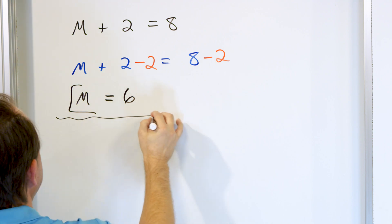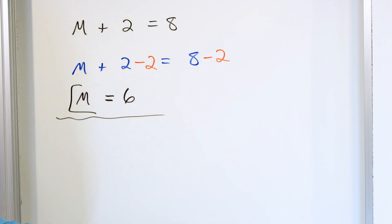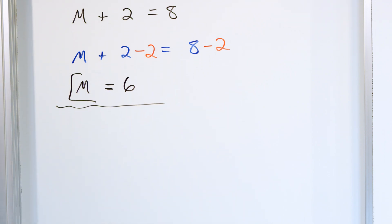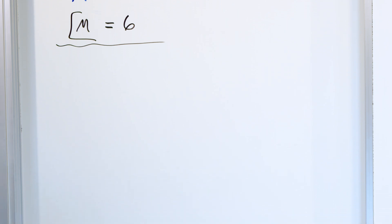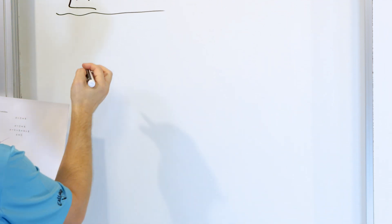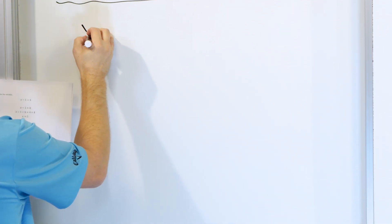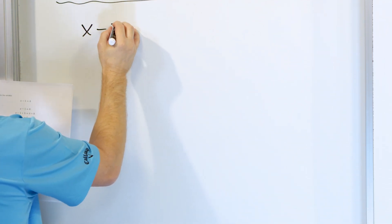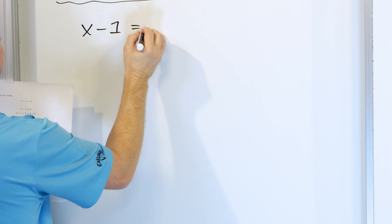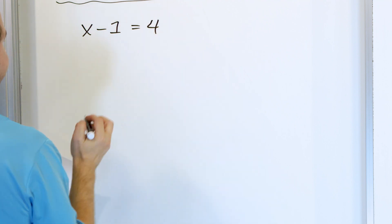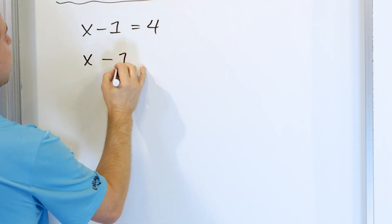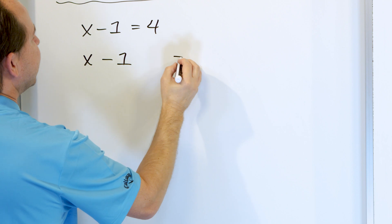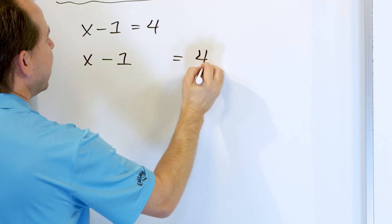If you're adding something on one side of an equation, then you can subtract and get rid of it. If you're subtracting something on one side, you can add to get rid of it. And later on, you can undo multiplication with division, and undo division with multiplication. The goal for every case is to get the variable by itself on one side of the equal sign.